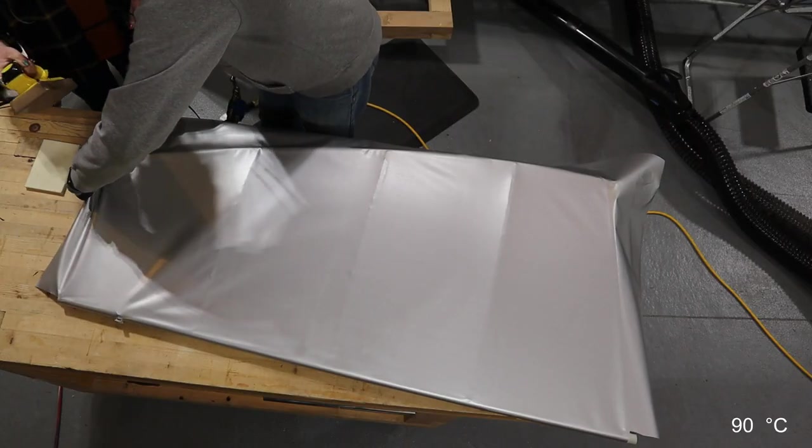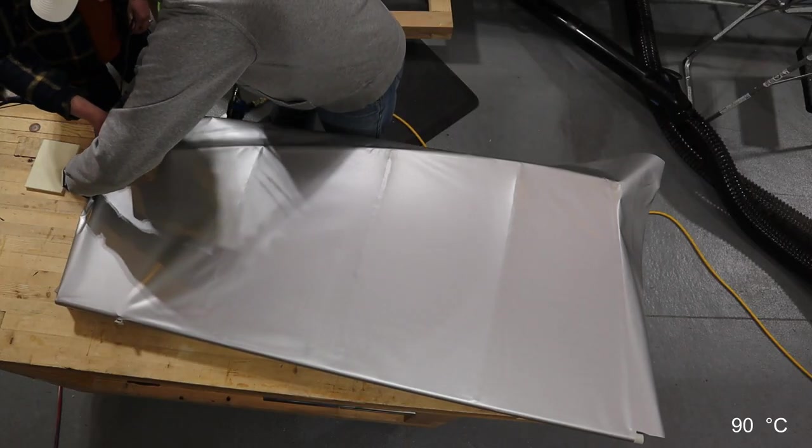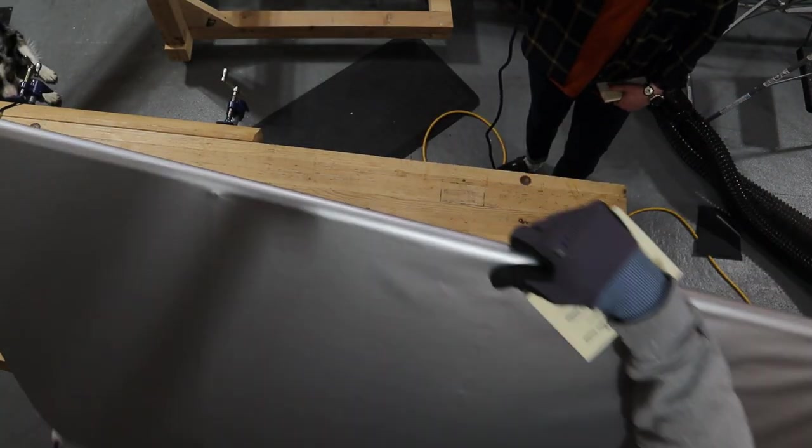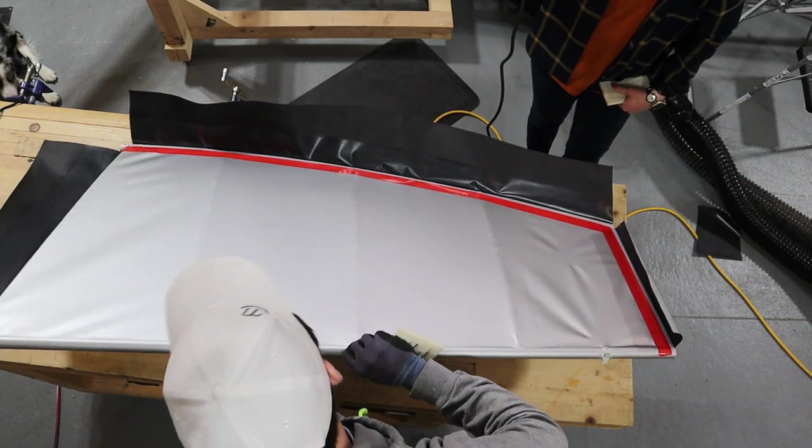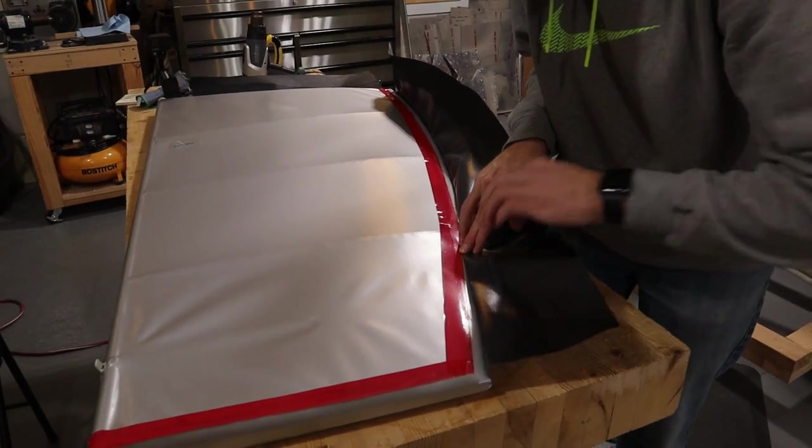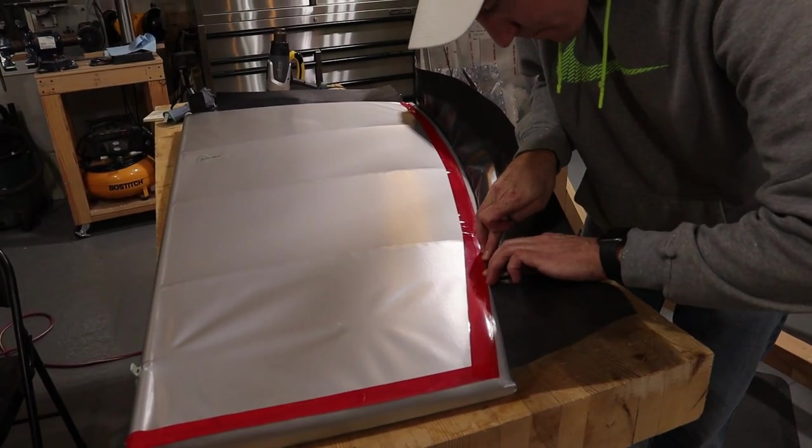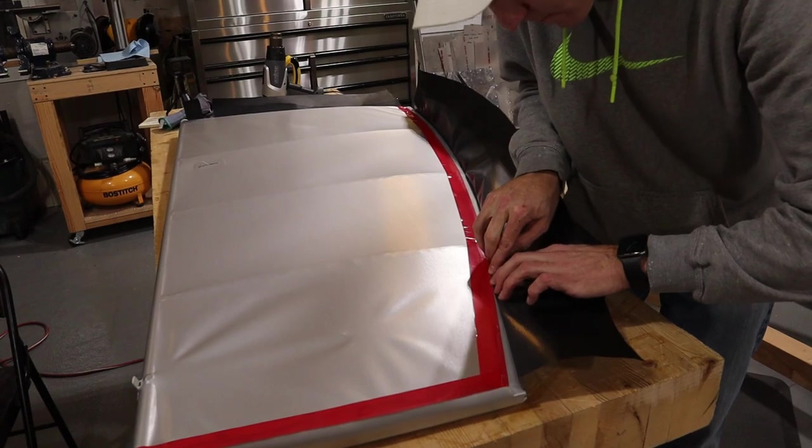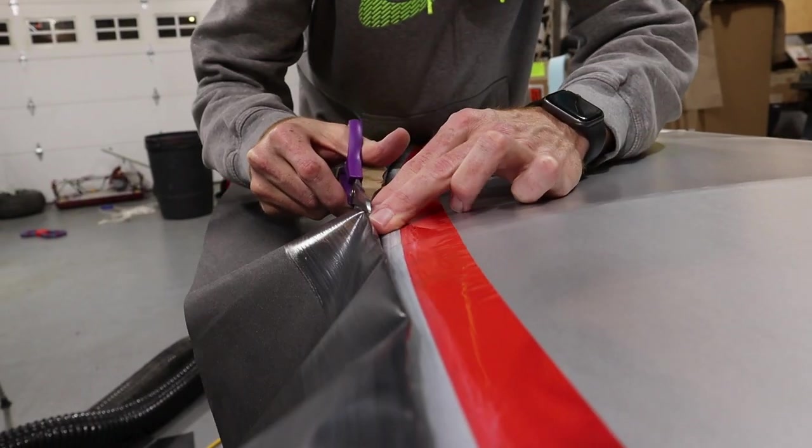After all the overlap glue dried we started putting the top piece on. Again, I would try to pull it as tight as possible as Amanda heated and rubbed it all down. Once we got close to the tape marking the edge of the glued area, I creased the fabric to mark where to cut and then cut it.